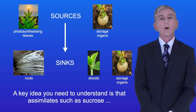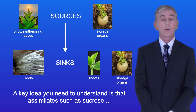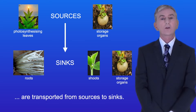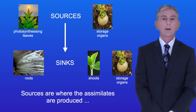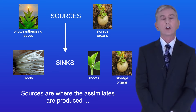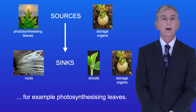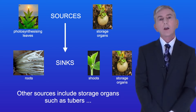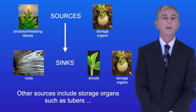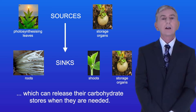A key idea you need to understand is that assimilates such as sucrose are transported from sources to sinks. Sources are where the assimilates are produced, for example photosynthesizing leaves. Other sources include storage organs such as tubers, which can release their carbohydrate stores when they're needed.